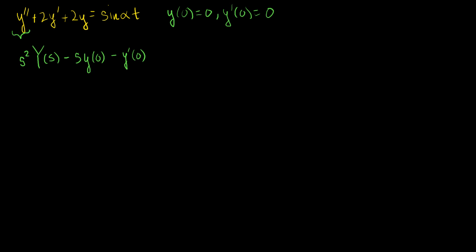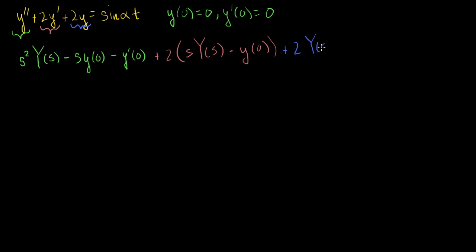The Laplace transform of 2 times the first derivative is plus 2 times [s·Y(s) minus y(0)]. The Laplace transform of 2y is plus 2·Y(s). And the right-hand side — the Laplace transform of sine of alpha t — we've done that multiple times: that's alpha over s² plus alpha².